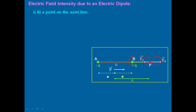Since we have two vectors EA and EB acting in exactly opposite directions, the net electric field will be the difference between the two. When two vectors act in opposite directions, the resultant is the difference. So EP = EB − EA, since EB is the larger one.